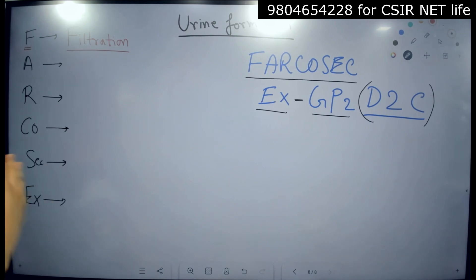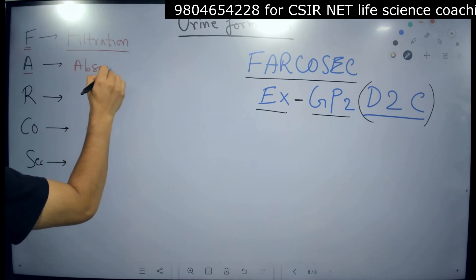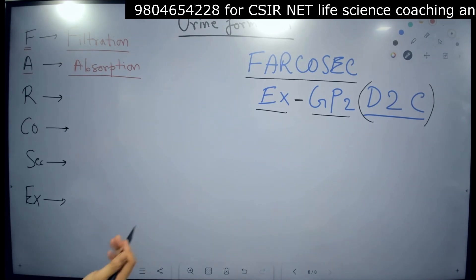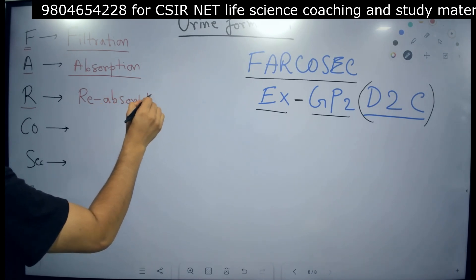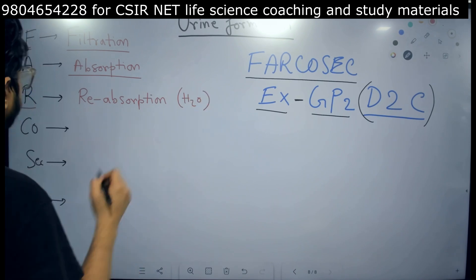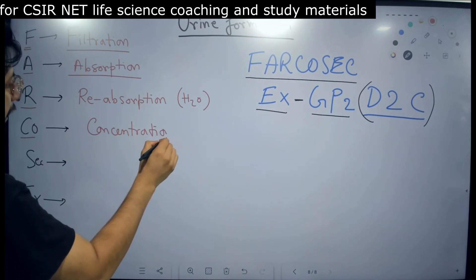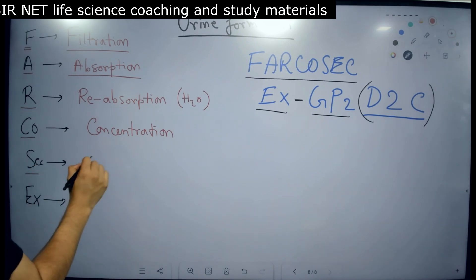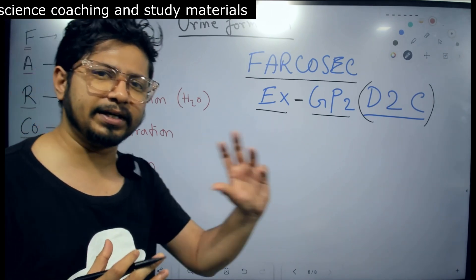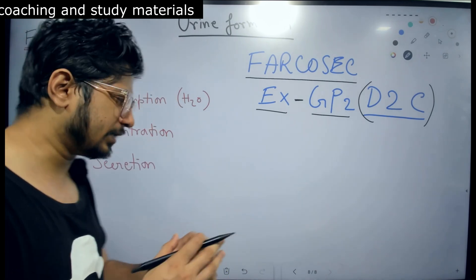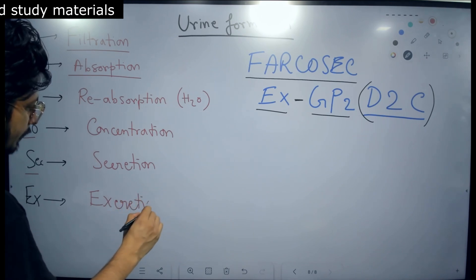These steps are sequential. F for filtration; A for absorption — absorption of important components like glucose, amino acids; R for reabsorption — basically reabsorption of water is needed. Then CO for concentration — concentration of the urine. S for secretion — many other components like creatinine from blood need to be secreted into the urine, and some drugs and components need to be secreted too. And X is excretion — that ends the process.